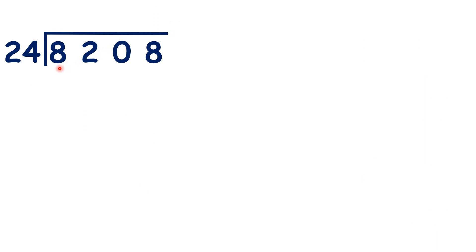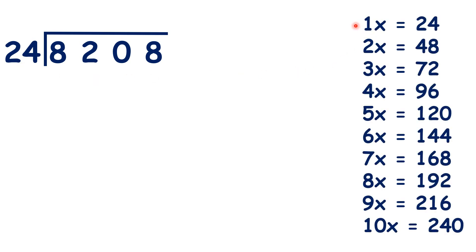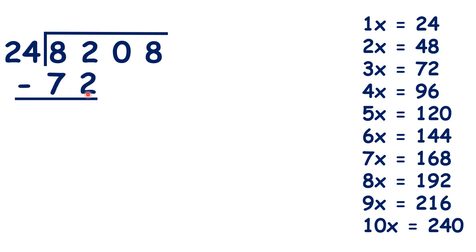Now we have 8,208 divided by 24. So we need our 24 times table, and we can start by dividing 82 by 24. We can see that 3 times 24 is 72, so we can write 72 below the 82 and write a 3 in our answer.